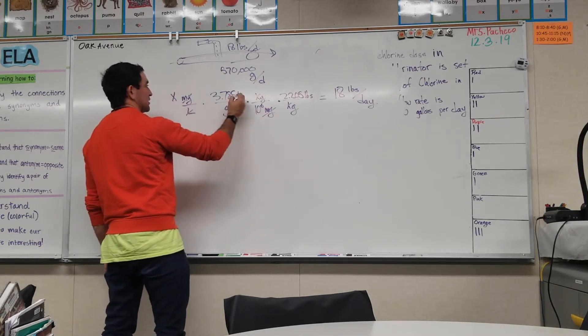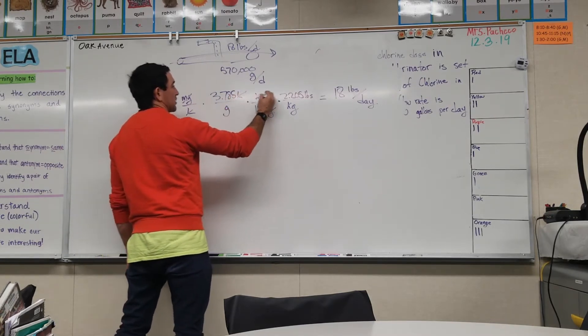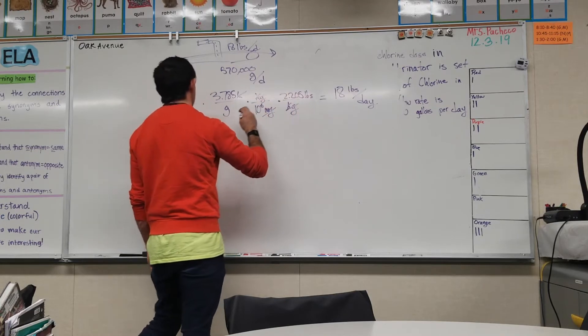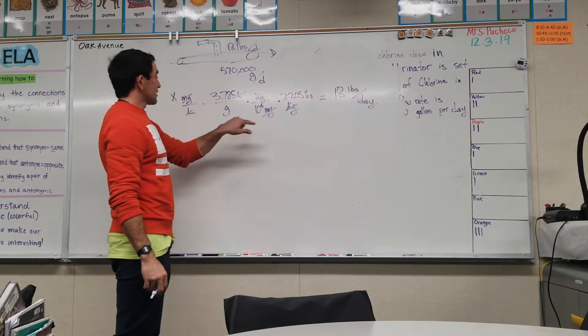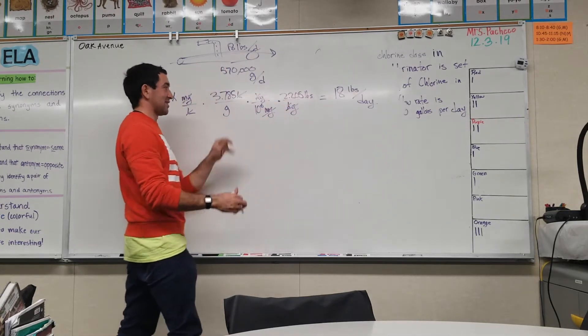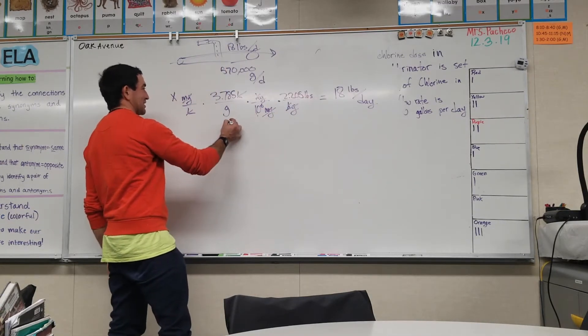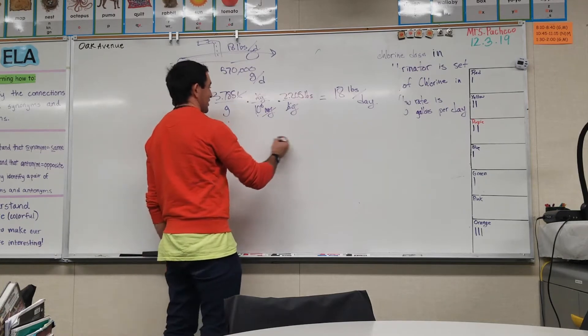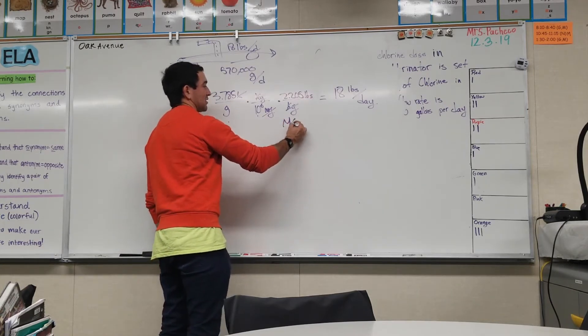There go the milligrams, there go the liters, there go the kilograms, and you're left with million gallons. Pounds per million gallons, that's a million, that's gallons.